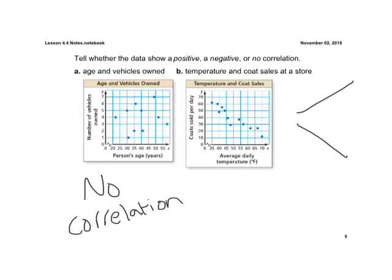But notice on that right graph there, those points generally from left to right, they're kind of going downhill there. They're going down from left to right. So that shows that we have a negative correlation. Just think of slopes.